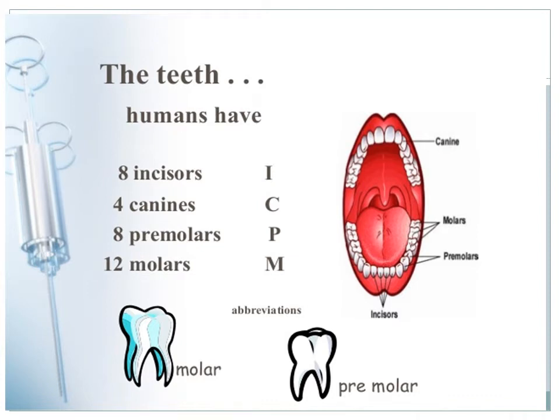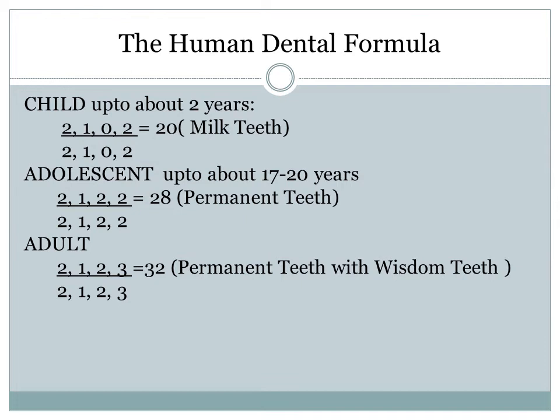Humans have 8 incisors, 4 canines, 8 premolars, and 12 molars in all. The dental formula indicates the number of permanent teeth of mammals — the number of incisors, canines, premolars, and molars — given for one half of each jaw. In a child the dental formula is 2102/2102 = 20. In adolescents it is 2122/2122 = 28. In adults it is 2123/2123 = 32, that is including the wisdom teeth.